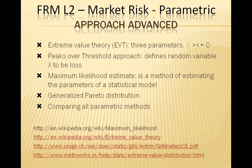The three cases of the generalized extreme value distribution are known as heavy, light, and lighter tails. For heavy tails (eta > 0) it becomes a Fréchet distribution; for light tails (eta = 0) it becomes a Gumbel distribution; and for lighter tails (eta < 0) it becomes a Weibull distribution. When researchers are confident the parent distribution has heavy tails, such as the t-distribution, they use eta > 0. If a test fails to reject eta = 0, that case is used. To be conservative and avoid model risk, using eta > 0 is the safest assumption.